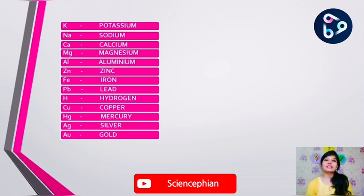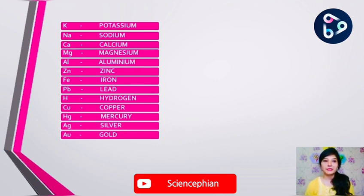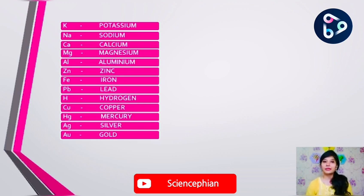The reactivity series of metals is arranged in increasing order of reactivity of various elements. Potassium is found to be the most highly reactive element in the series — if we leave it open in the air, it can easily catch fire.